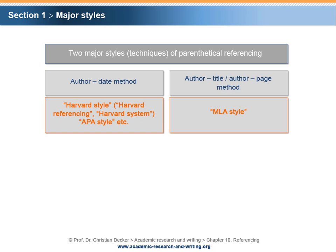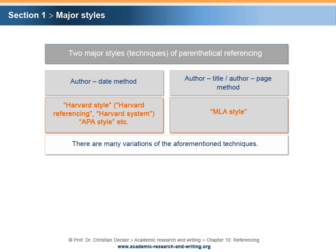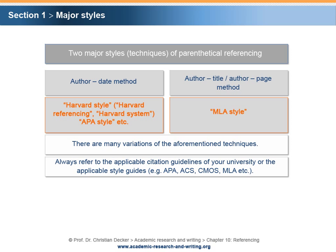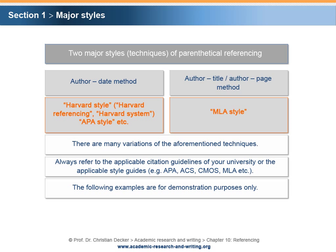It is important to note that since there are many variations of the aforementioned major techniques, and almost every academic institution or even department follows its own guidelines, it is absolutely necessary to always refer to the applicable citation guidelines of the institution or department, or the applicable style guides — for example, APA, ACS, CMS, MLA, etc. The following examples are for demonstration purposes and may differ from the specific citation standards of the institution where the research paper is written.